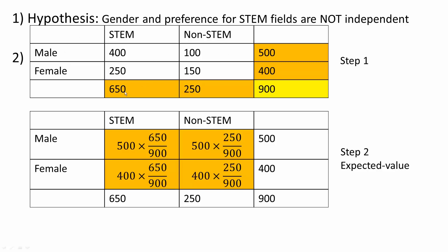Now I need to add totals. 400 plus 250 is 650 people who preferred STEM fields. 100 plus 150 is 250 people who preferred non-STEM. Total males: 400 plus 100 equals 500. Total females: 250 plus 150 equals 400. Grand total: 500 plus 400 equals 900, which also equals 650 plus 250 — these two totals will always match.